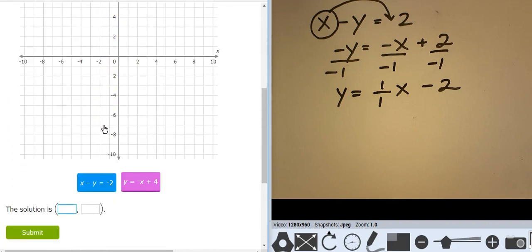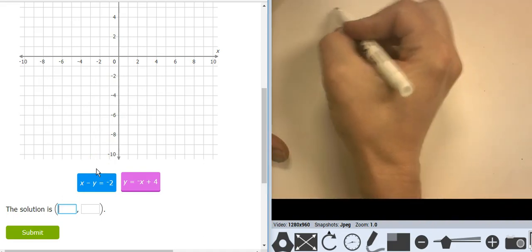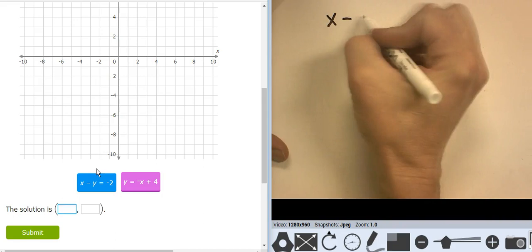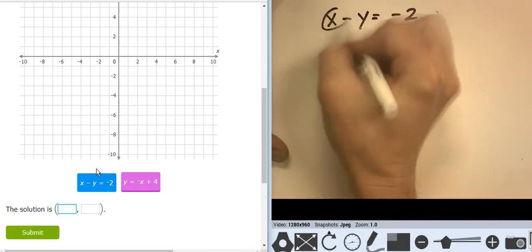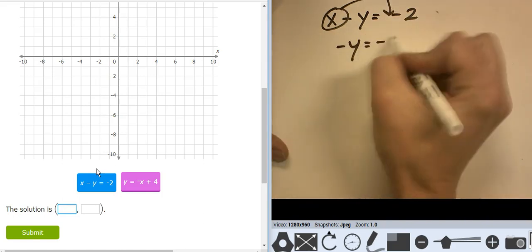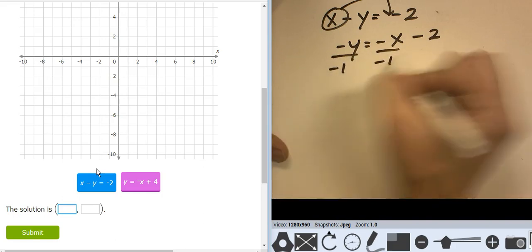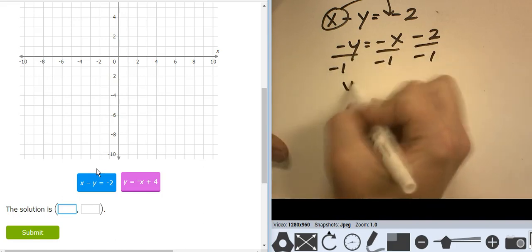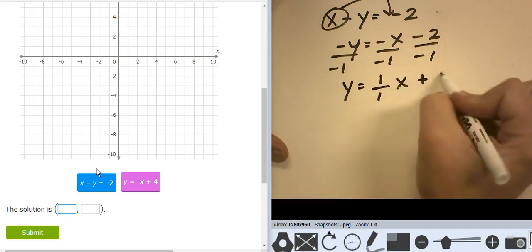Let's see. The top one, this blue one, is in the wrong form. So let's manipulate it. So x minus y equals negative 2. Move the x. So negative y equals negative x minus 2. Divide by the y. So y equals 1 over 1x plus 2.